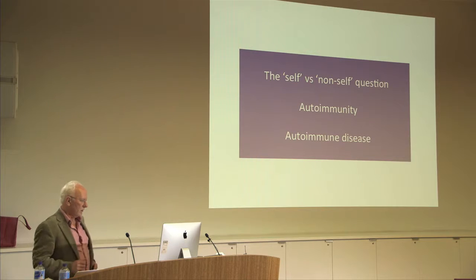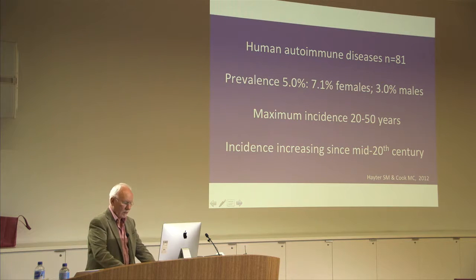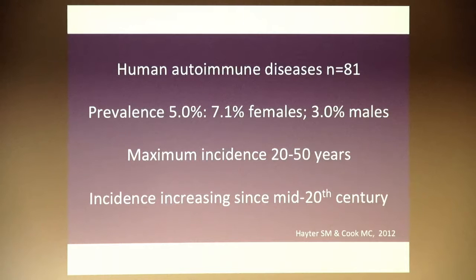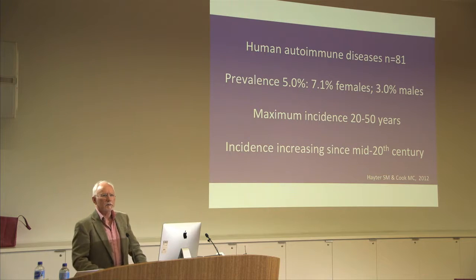There are, at current count, 81 autoimmune diseases, with a prevalence in females overall in the population of 7% and in males 3%, with a maximum incidence between 20 and 50 years of age — in the productive periods of our lives. An important thing to appreciate is that autoimmune diseases, along with other immune diseases — in particular allergies — have been increasing gradually since the middle of last century, since just after the Second World War.